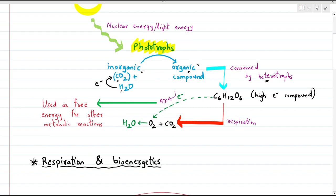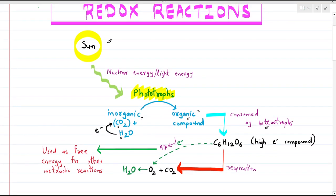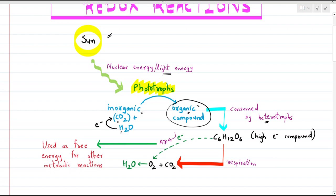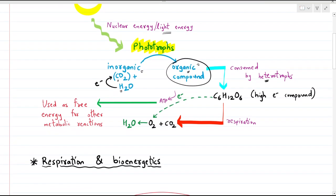When organic compounds are consumed by the heterotrophs, the main purpose is to provide energy. The nuclear or light energy was converted into chemical energy in the form of organic compounds. This chemical energy is consumed by the heterotrophs, and from this chemical compound, energy is extracted so that free energy is available for other metabolic reactions occurring in the heterotrophic cell.